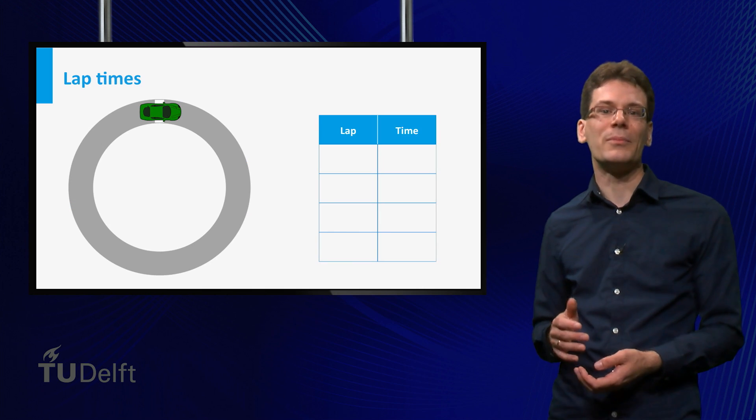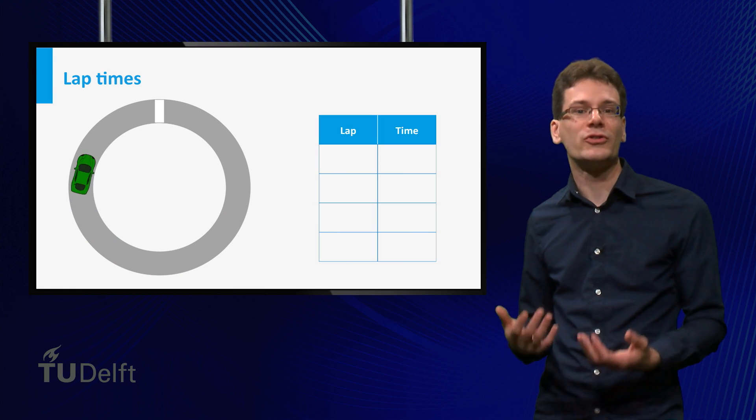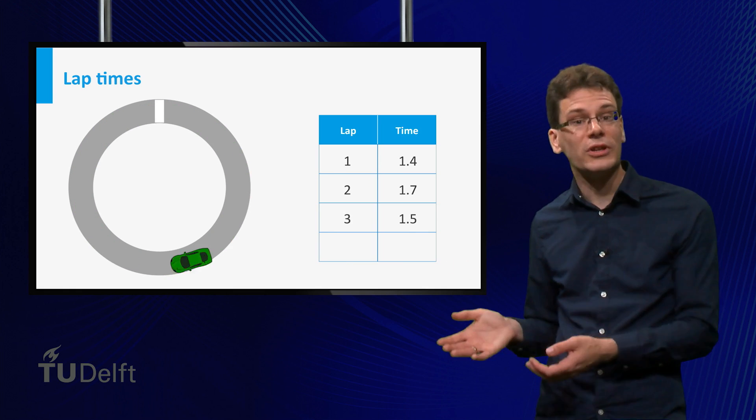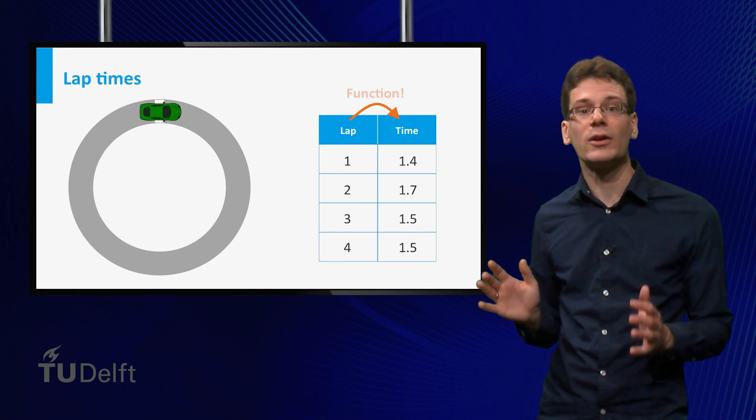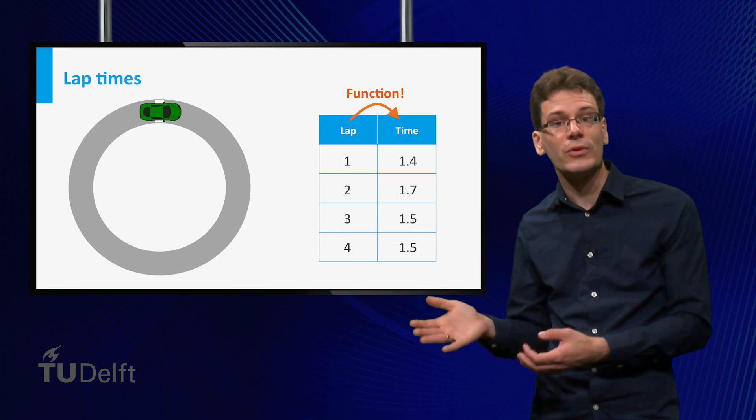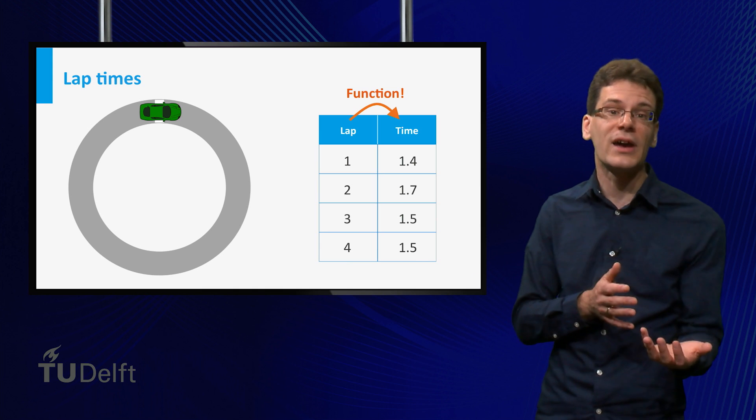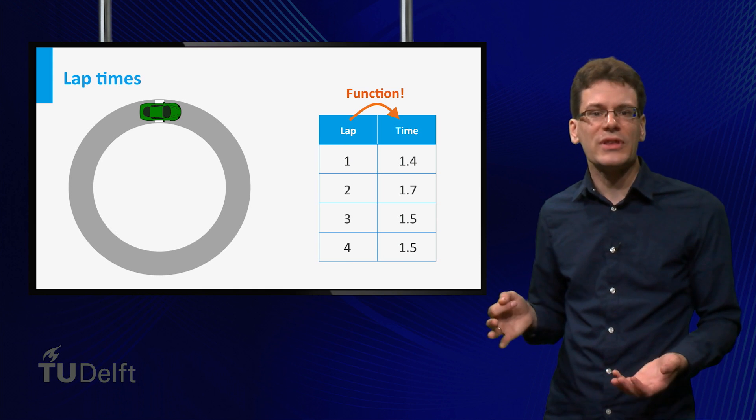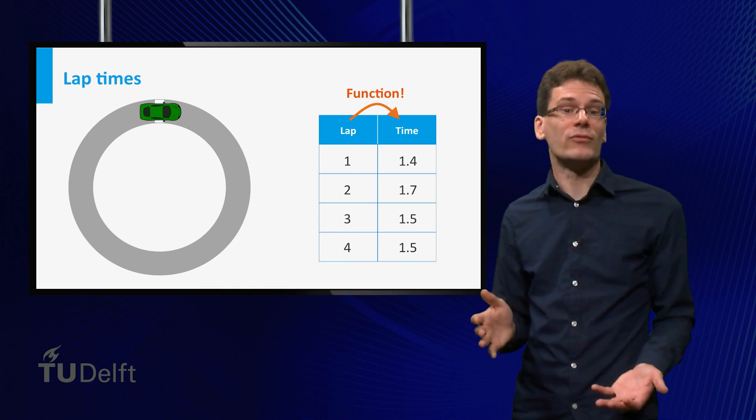Just a simple example. Think of a car racing on a track. For every lap, you can measure its lap time and put it in a table. This table then completely describes the function that associates to each lap number its corresponding time. You could try to find a formula for this, but this makes little sense. The table contains all information.